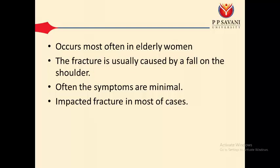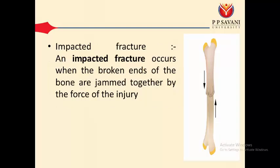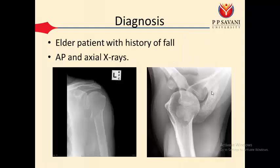It is an impacted fracture in most cases. In an impacted fracture, as you can see in the image, the force jams both parts of the bone together — one force pushes the bone in one direction, and the opposing force pushes it in the other direction, so the parts end up in a jammed position. This type of fracture is called an impacted fracture.